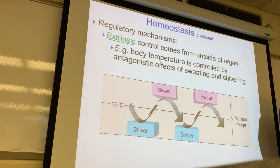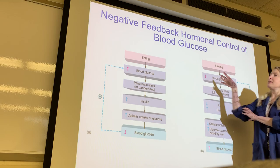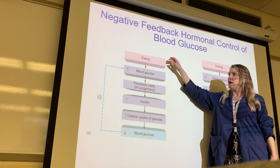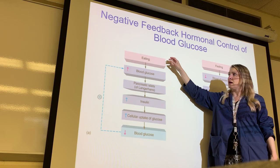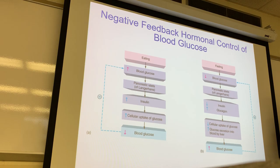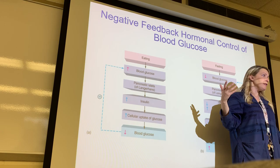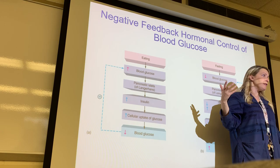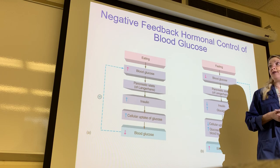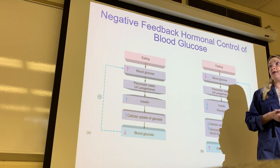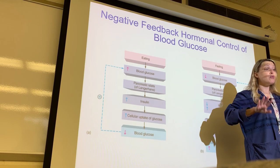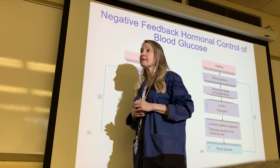Homeostasis is managed by negative feedback loops, and a loop has three main parts. First, a stimulus — the deviation from the set point. Second, a sensor — which detects the deviation. Third, an integrating center — which determines what to do with the information. And finally, an effector — which causes the response or effect. Let's label these parts using the thermostat example.